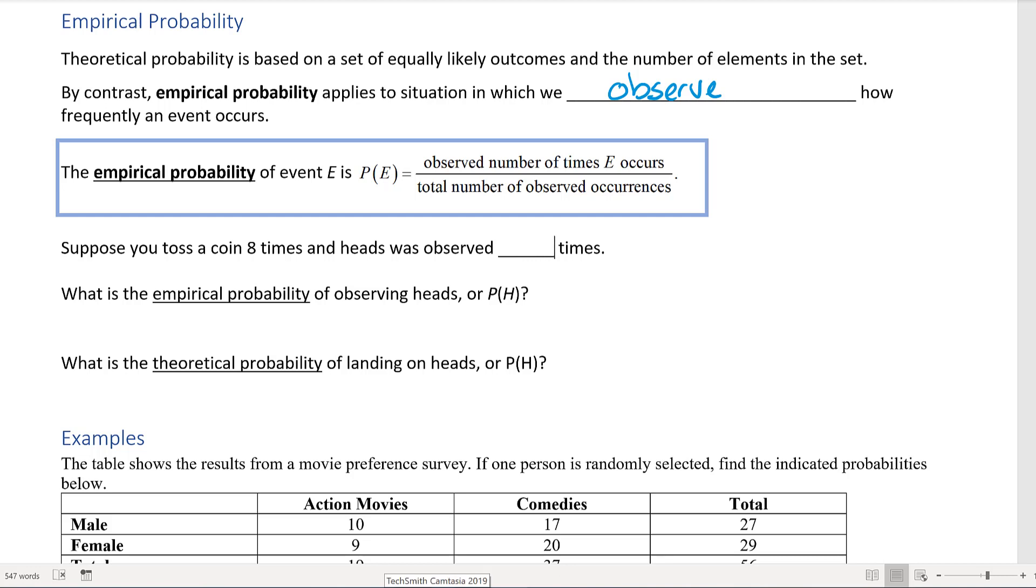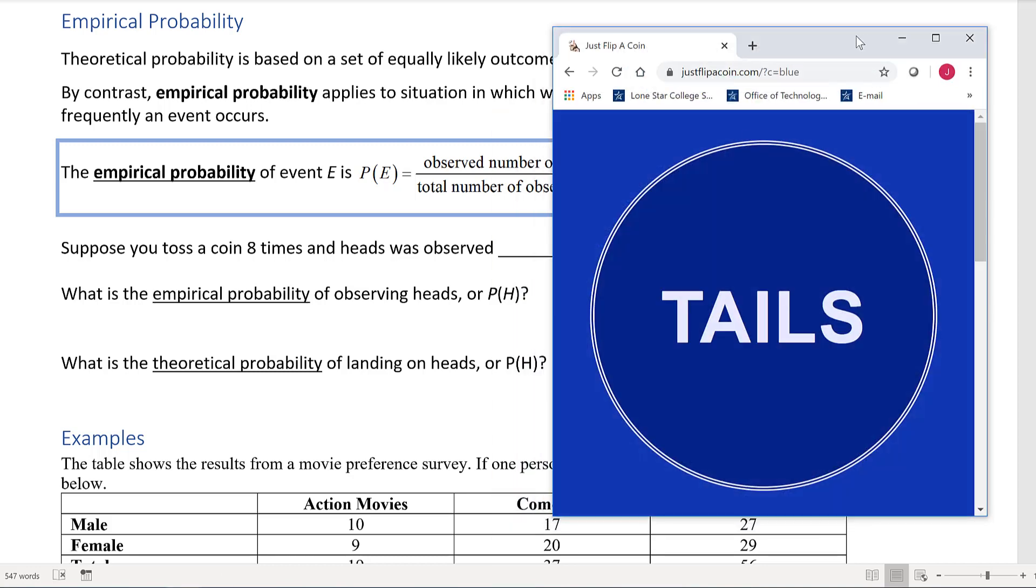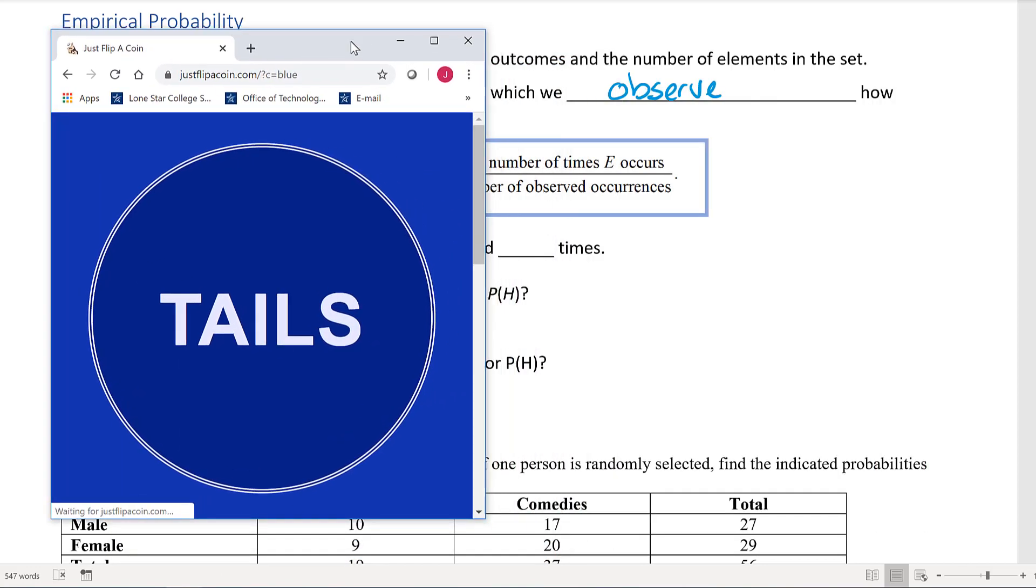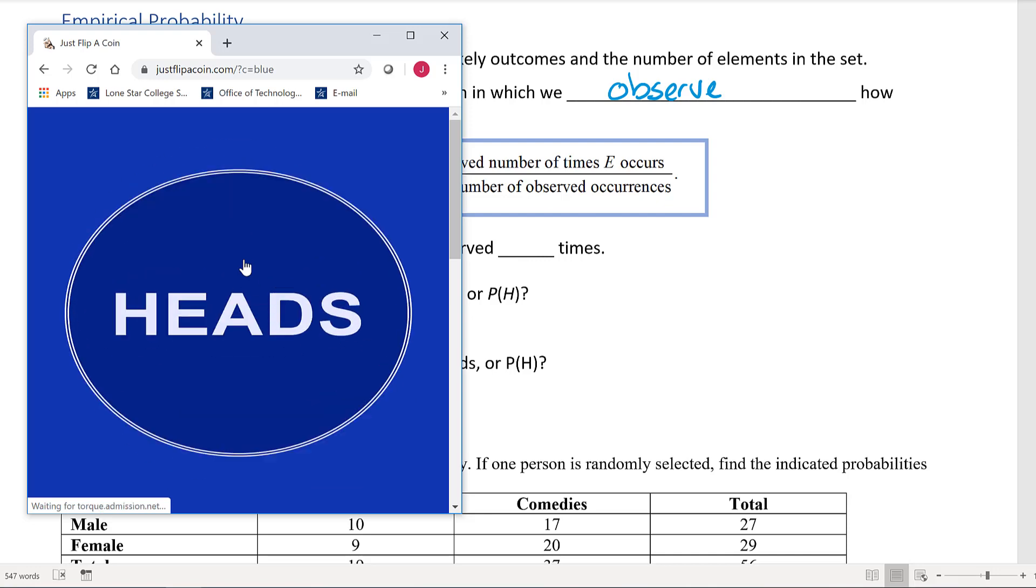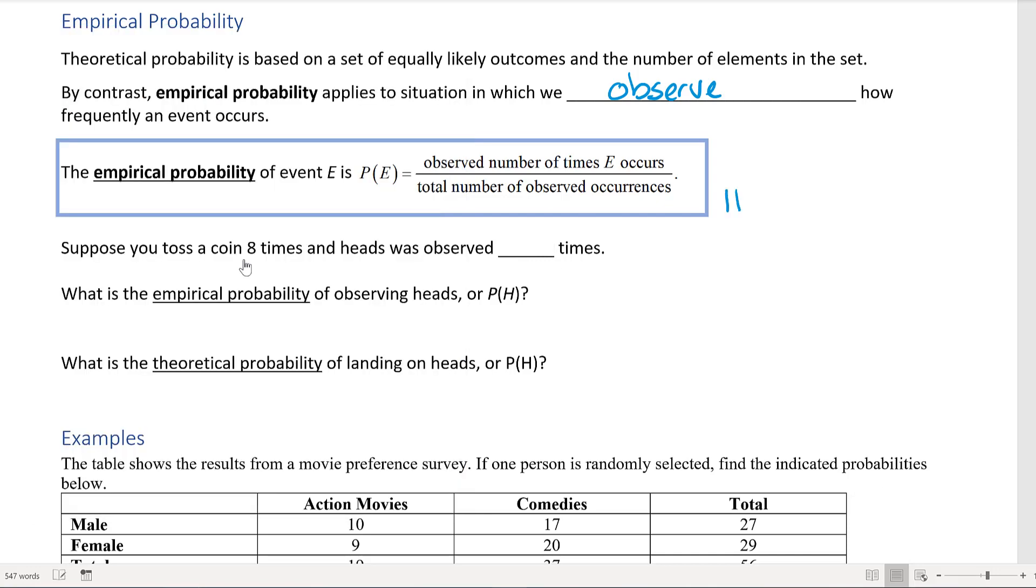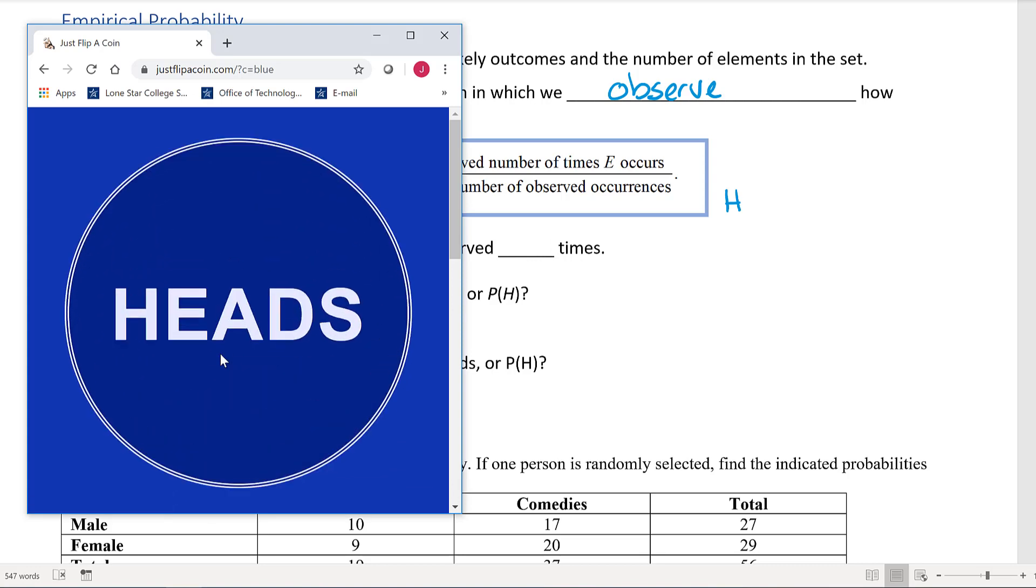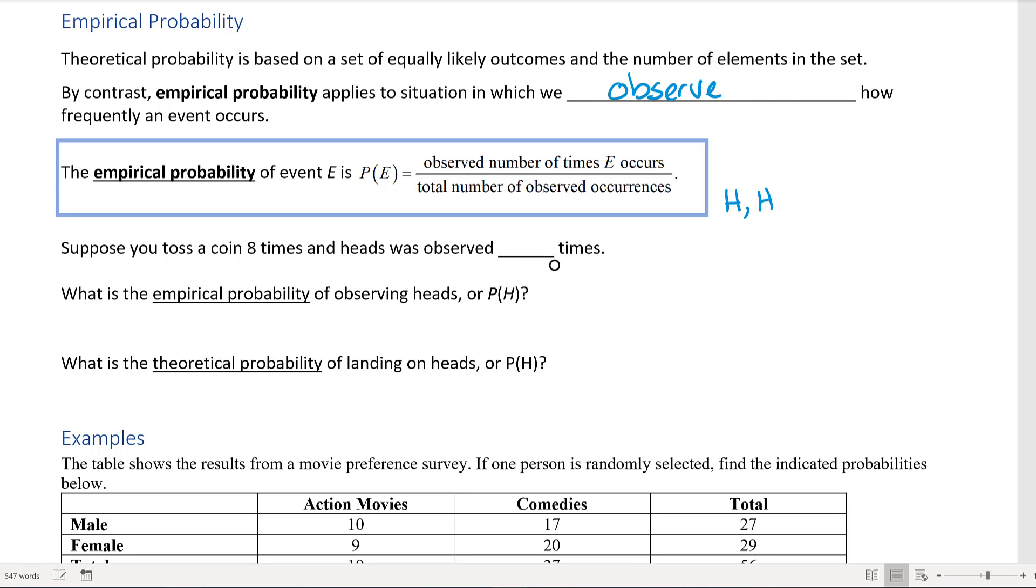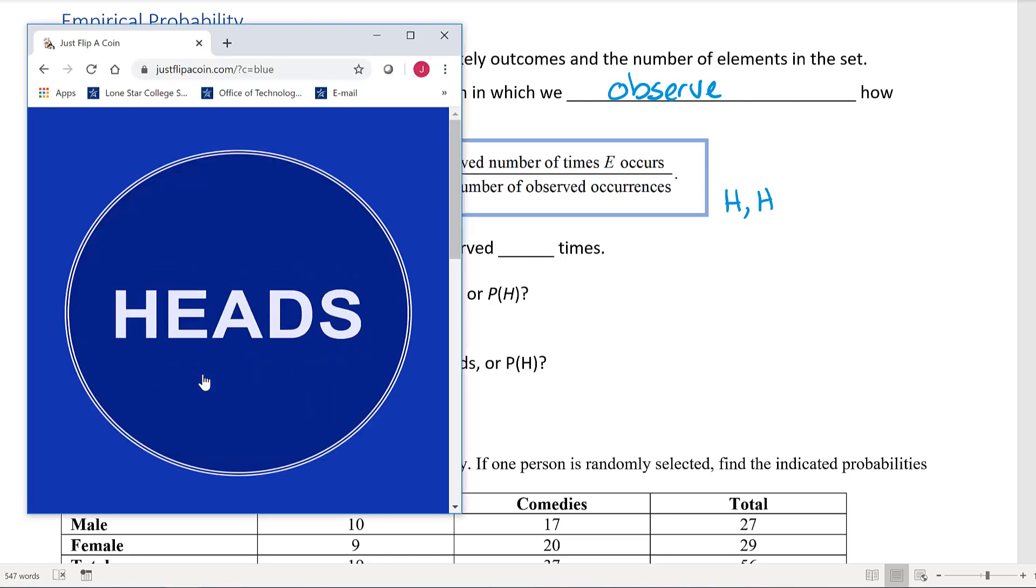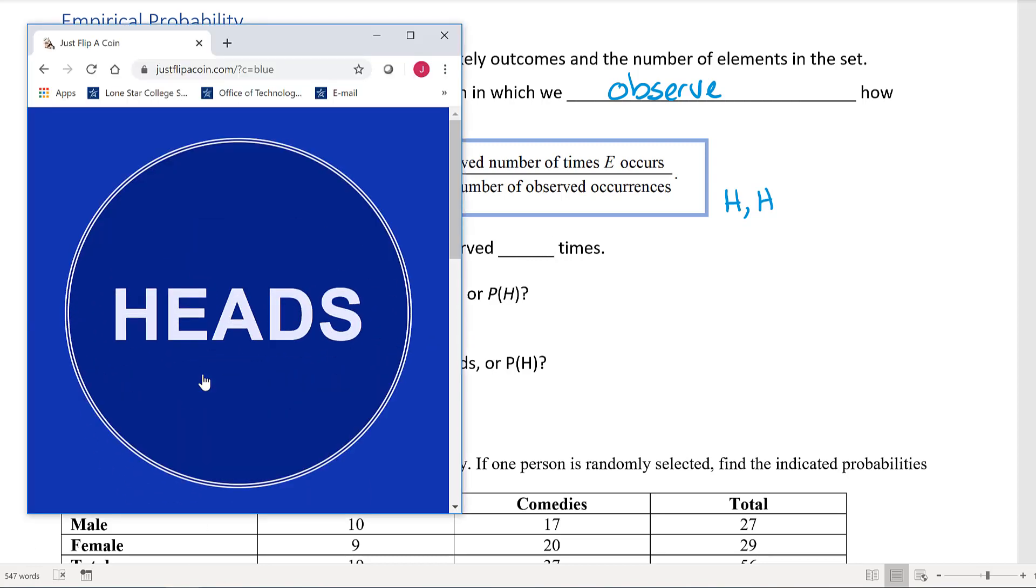Now theoretically it should be four times out of eight, right? But let's see what happens when we actually try it. So our first flip here is heads. Next we get another heads, next we get another heads, another heads.